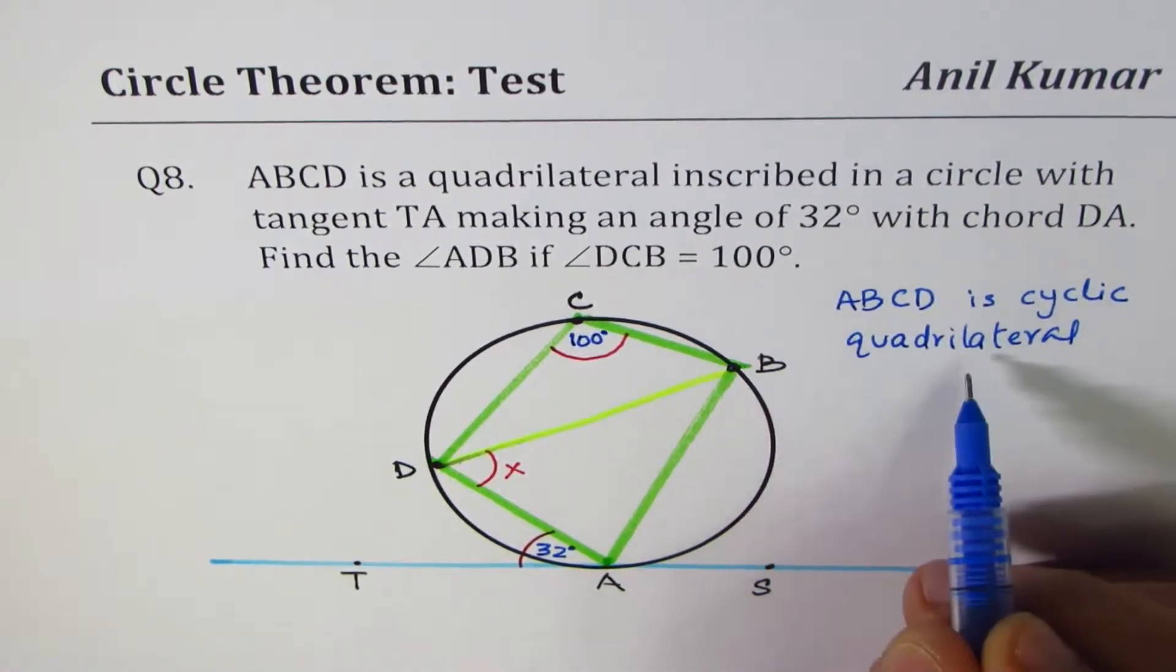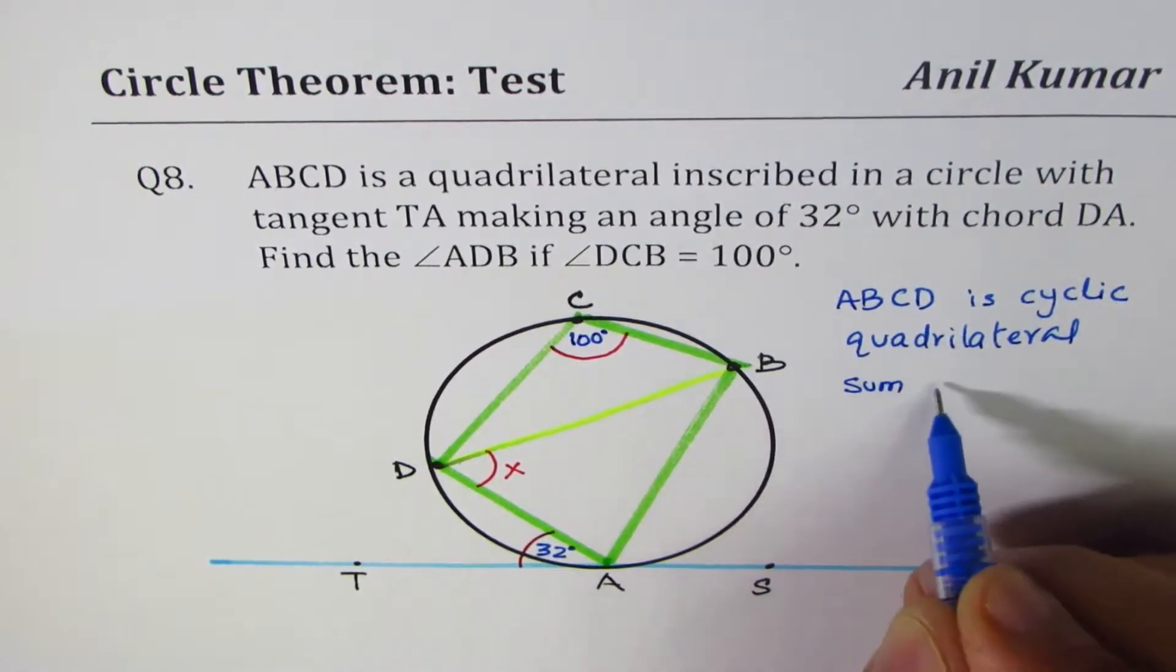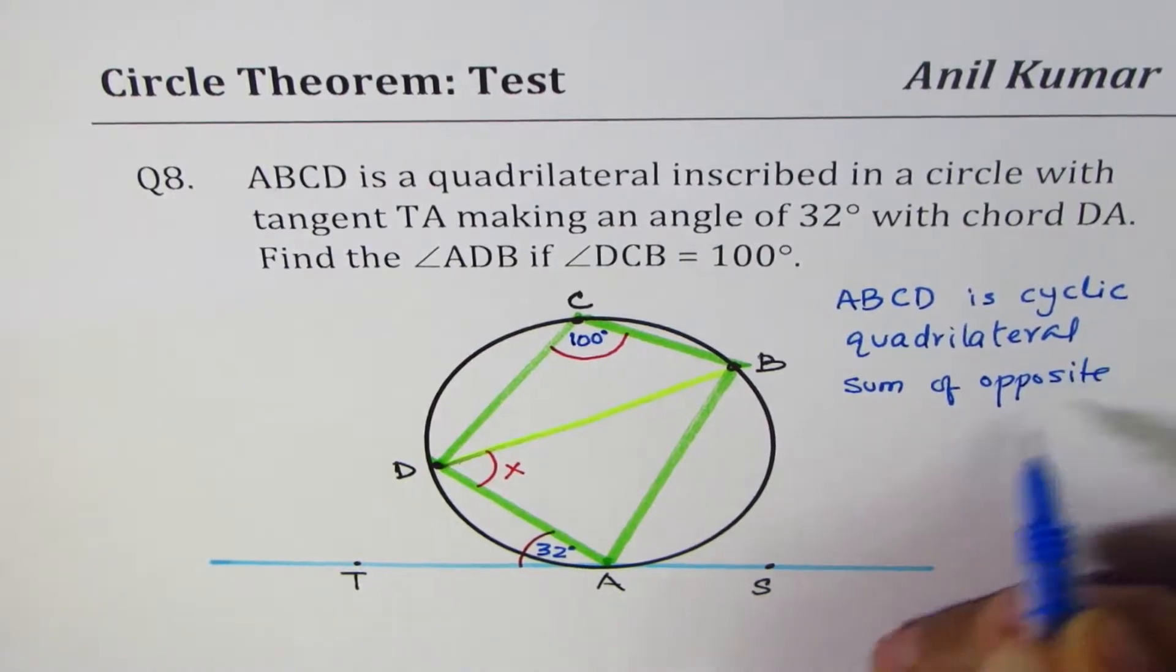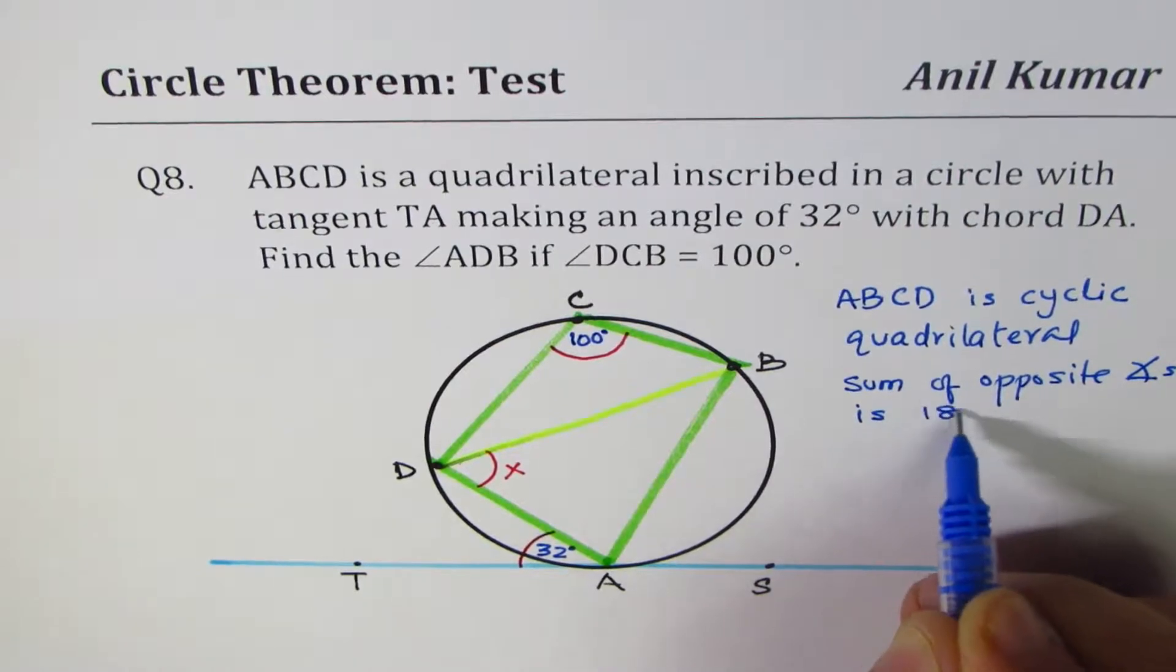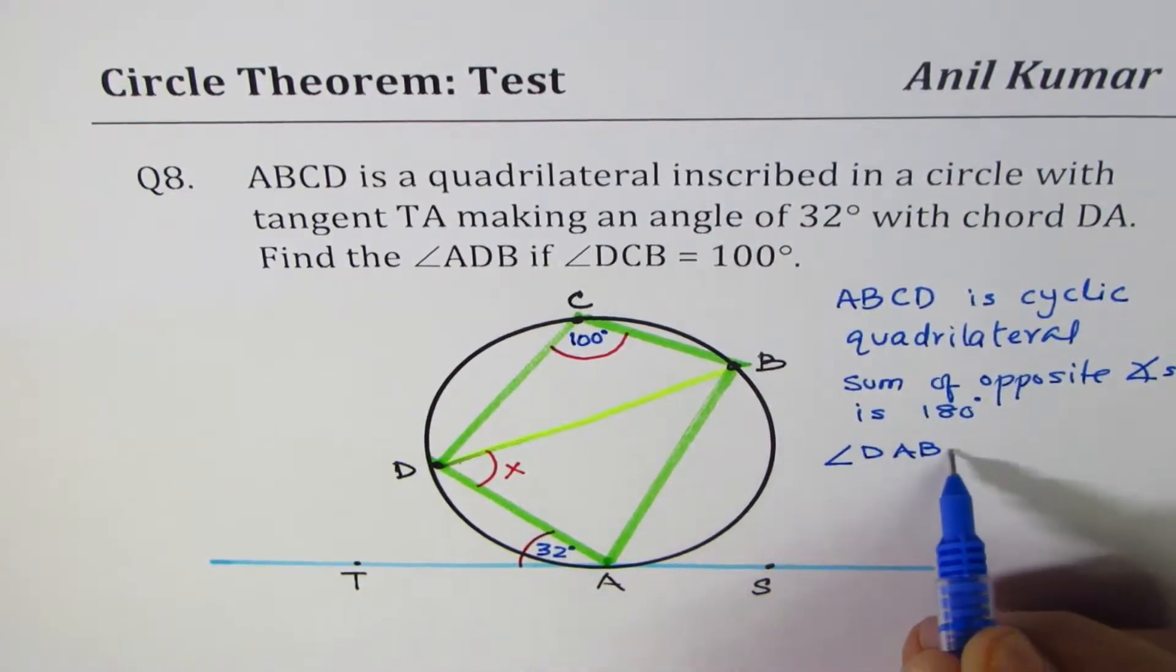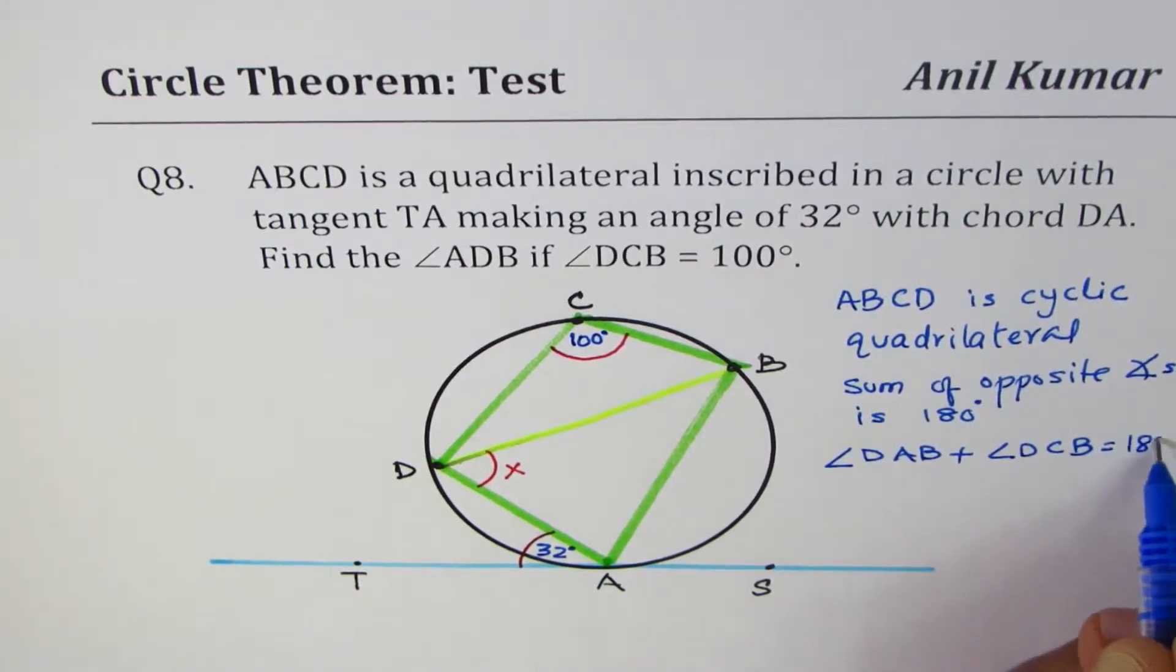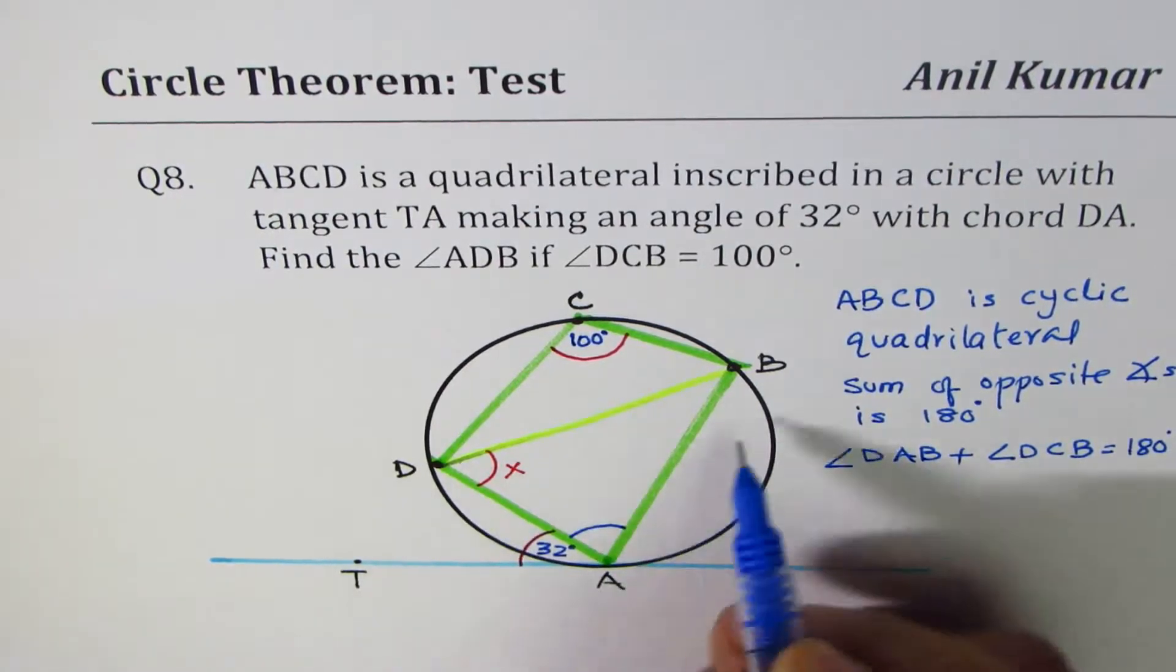Now, if ABCD is a cyclic quadrilateral, then the rule is that sum of opposite angles is 180 degrees. So from there, we can say that the angle DAB plus angle DCB equals to 180 degrees. And so we can find the angle DAB.